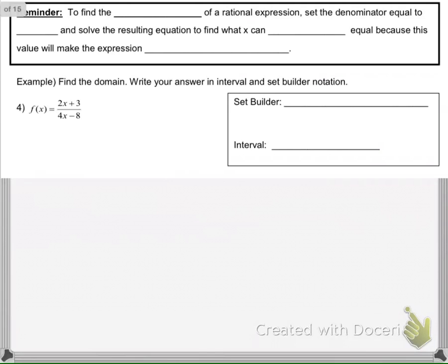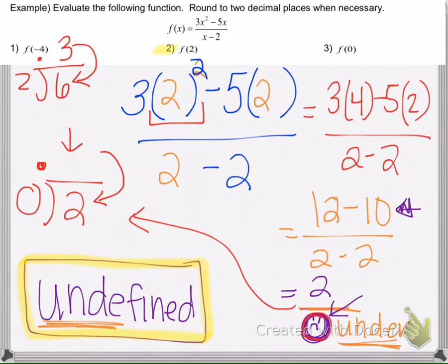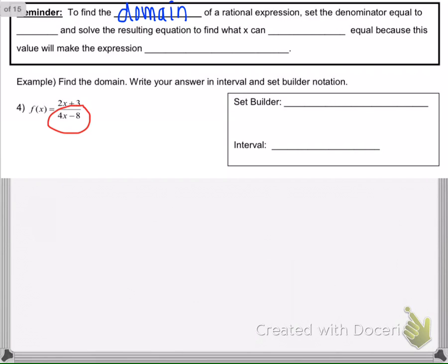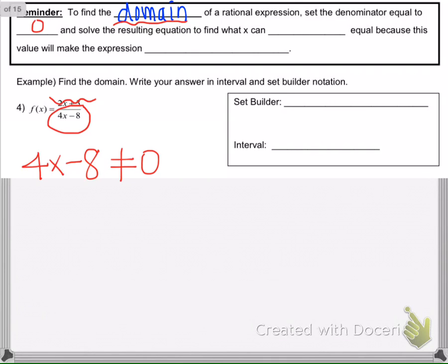Now let's review domain. Domain is all the numbers we can plug in for x into a given function. When you have a fraction, we learned that you cannot have 0 in the denominator. So to find the domain of a rational expression, you set the denominator equal to 0 and solve the resulting equation to find what x cannot equal, because that value will make the expression undefined.